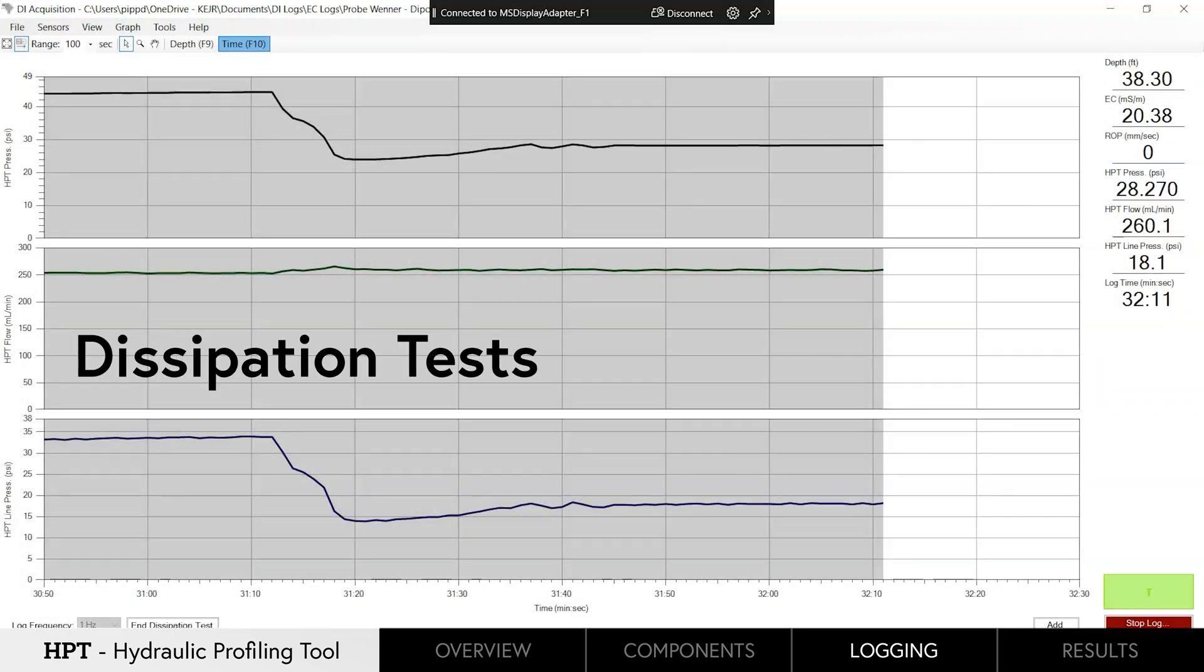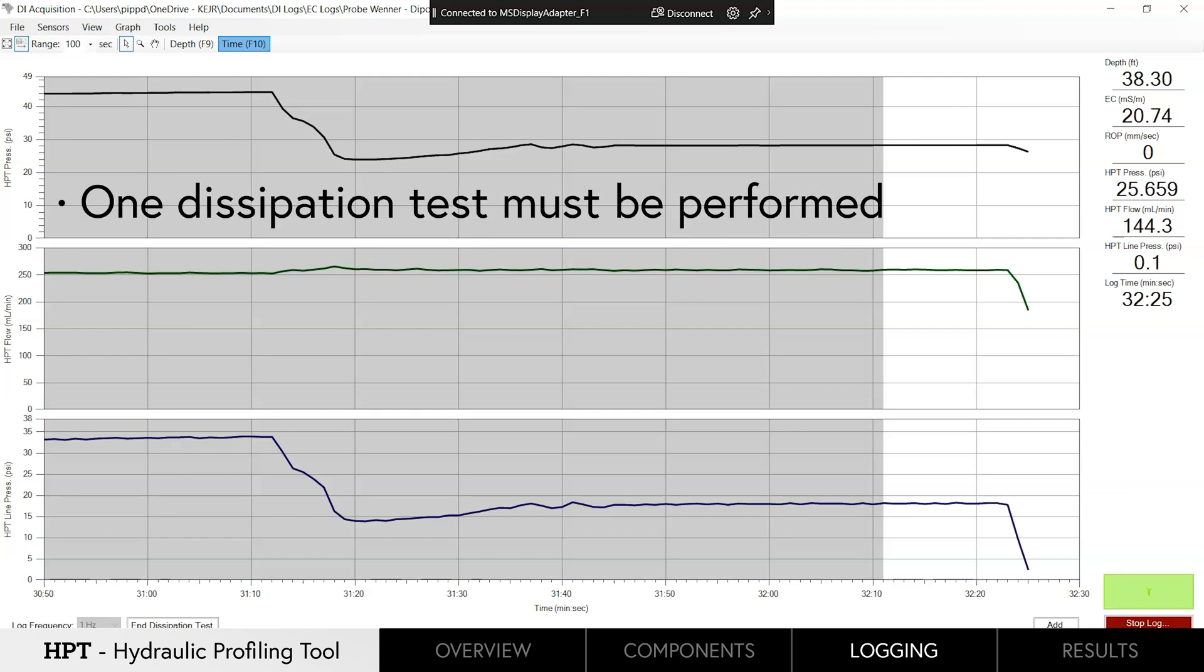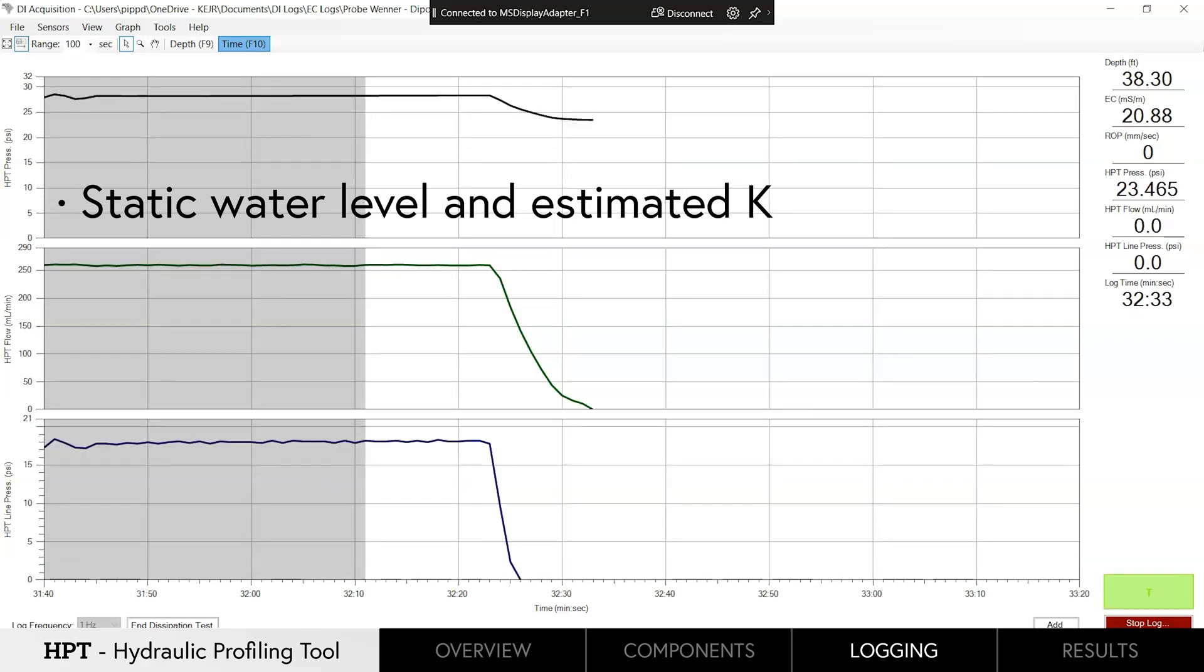Dissipation tests are completed in a zone of higher permeability indicated by lower HPT pressure. At least one dissipation test must be performed in order to calculate the static water level and estimated groundwater-specific conductance regions from the log.